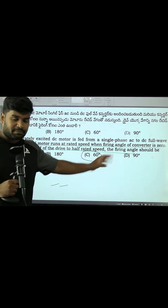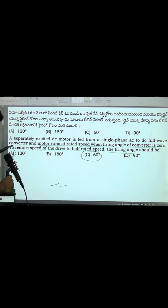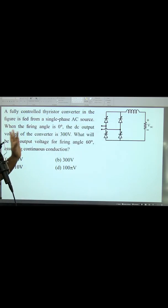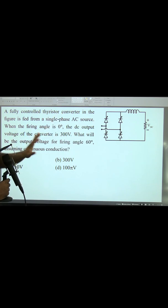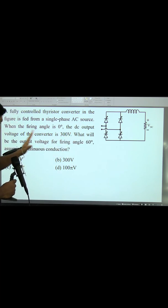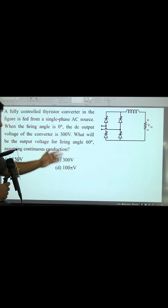I am opening the A paper now. A paper will see this question once. Fully controlled thyristor converter in the figure is fed from a single phase AC source. When the firing angle is zero, the DC output voltage of the converter is 300 volts. What will be the output voltage for the firing angle of 60 degrees, assuming continuous conduction?